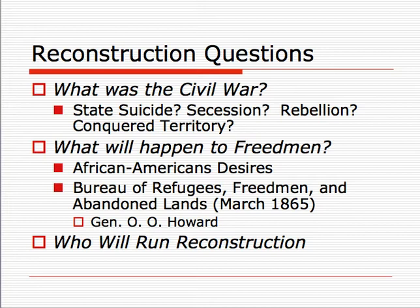Then the question was: what was going to happen to the Freedmen? Many African Americans had their own desires, in addition to the ideas of many Southern whites, Northern whites, and free blacks. The federal government established the Freedmen's Bureau—officially the Bureau of Refugees, Freedmen, and Abandoned Lands—run by the military. It was given a one-year charter to help African Americans, now free, transition into free life, particularly for former slaves in the South.